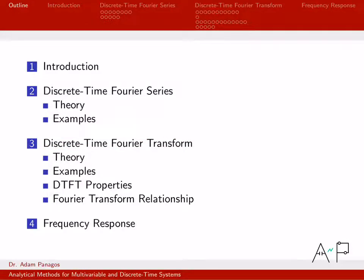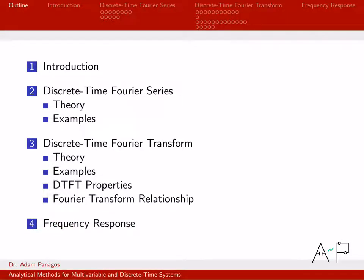We'll wrap up the series by looking at the frequency response of the system. The frequency response is the discrete time Fourier transform of the system impulse response. By looking at the frequency response, we can simplify the input-output relationship — we don't have to do convolution; we can instead do multiplication. The frequency response function also tells us a lot about the system, since it lets us look at the system in the frequency domain, where different characteristics can be more easily seen.